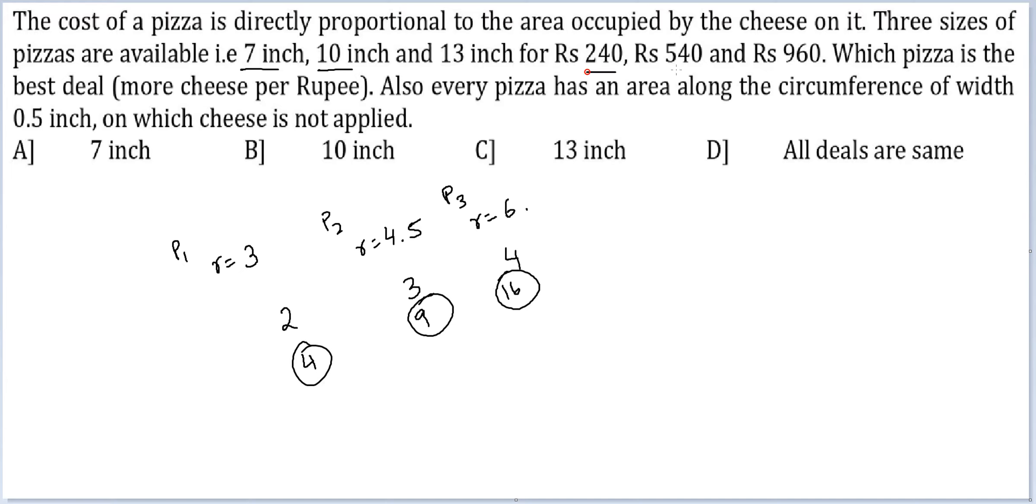Now the costs have also been given to us. We have the ratio numbers for area. Let's just calculate. 240 by 4 is equal to 60. 540 by 9 is equal to 60. At this time itself, I can mark option D as the answer because these are individual and I have got two possible equal answers.